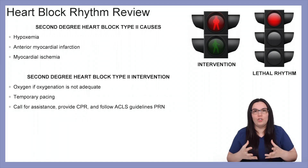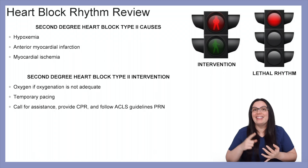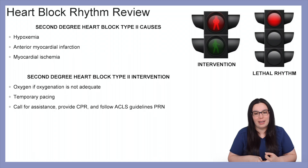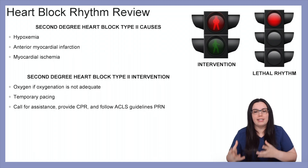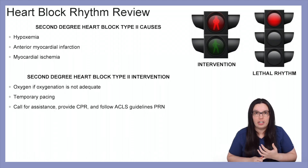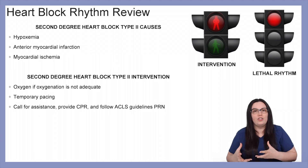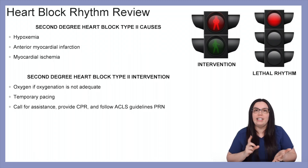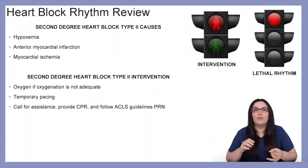Second degree type 2 heart block causes include hypoxemia, anterior myocardial infarction, and myocardial ischemia. Interventions include oxygenation if inadequate, temporary pacing, and if it progresses into a more lethal rhythm, we need to call for assistance, provide cardiopulmonary resuscitation, and follow our ACLS guidelines.